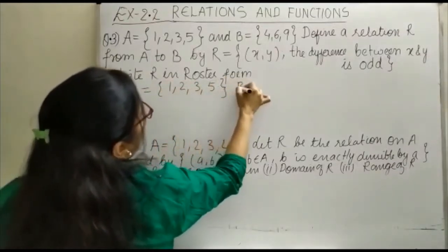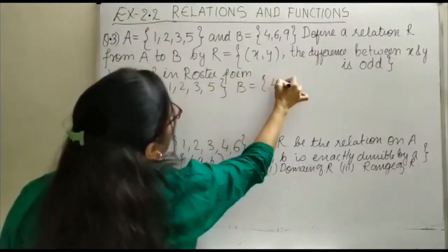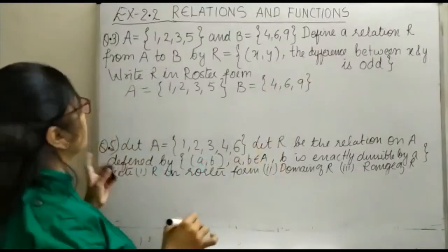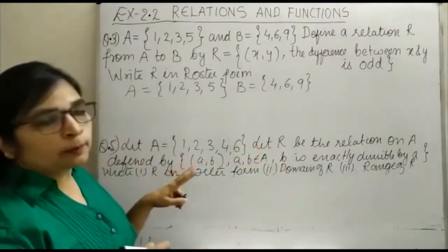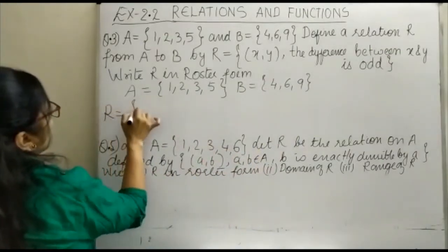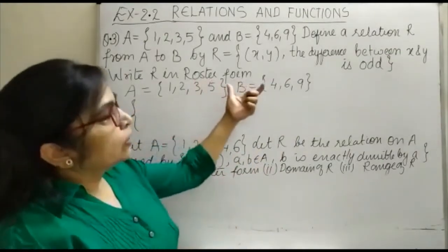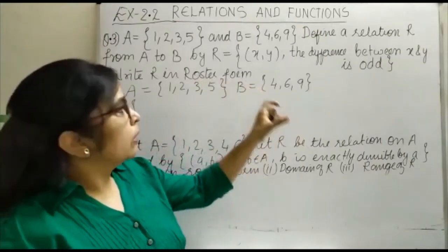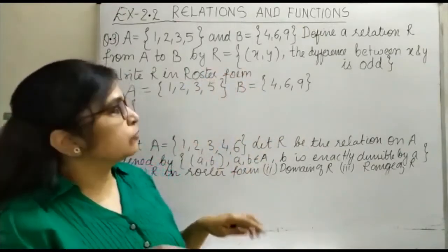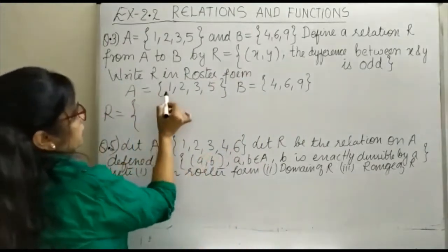Define the relation R from A to B. You have to define a relation R from A to B where the ordered pairs have an odd difference. What is the order? Let's check first. Let's check first when we take A cross B.